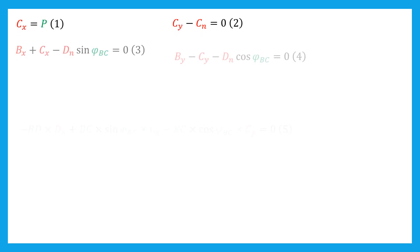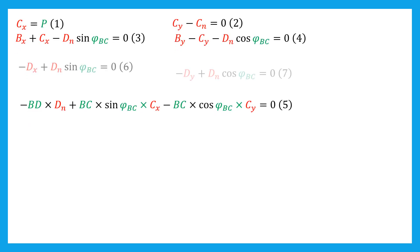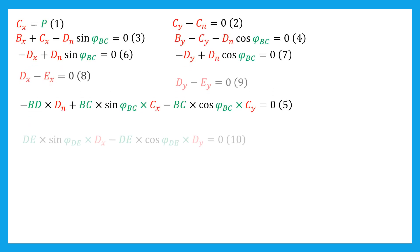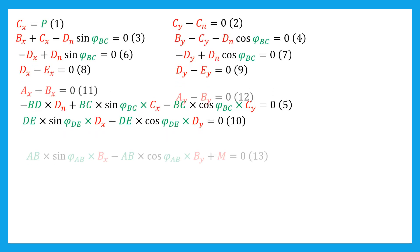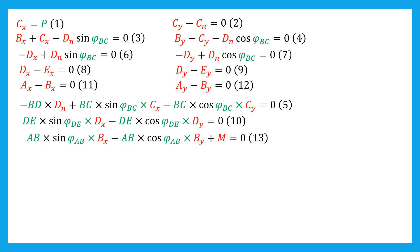We have succeeded in establishing 13 equilibrium equations in terms of 13 unknowns. Before writing these equations in matrix form, it is better to simplify the moment equilibrium equations 5, 10, and 13.